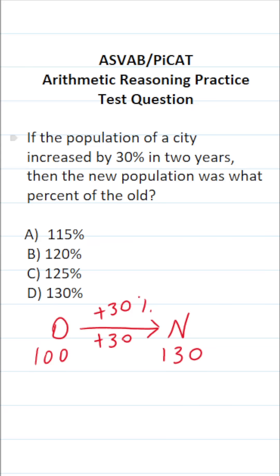Now let's answer the second part of the problem. The new population was what percent of the old population? Well, that means you're going to take the new population and divide it by the old population.